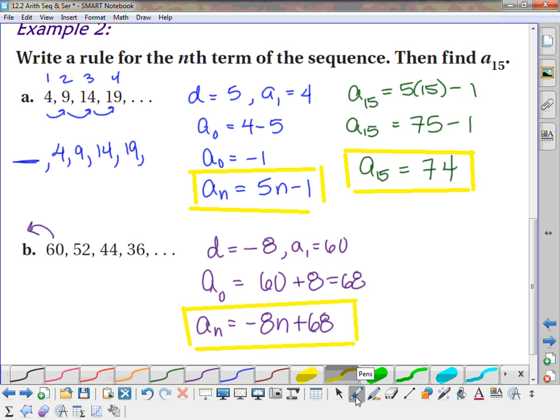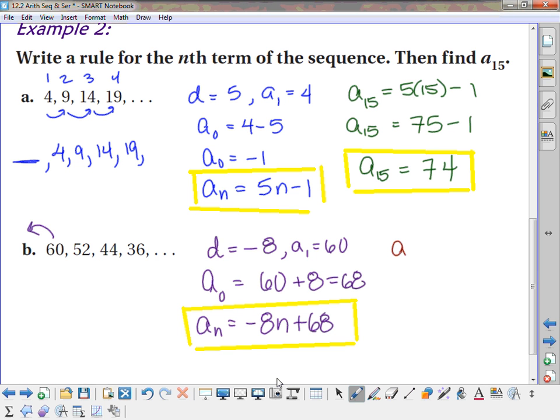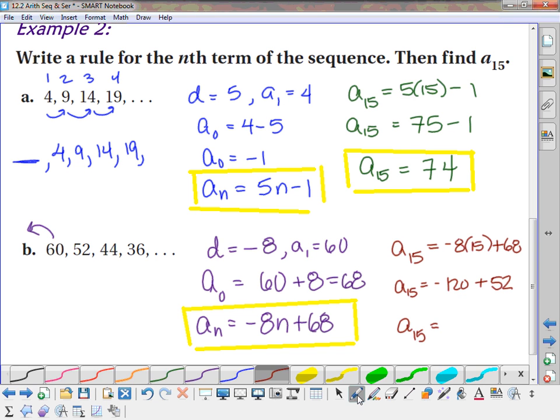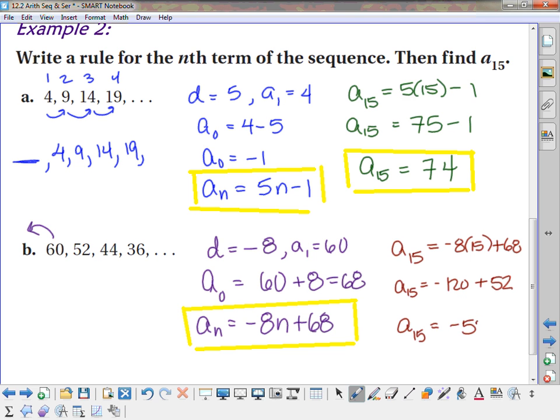All right, then to find a sub 15, we just plug it in. So how about you guys figure out what a sub 15 is now? I'll let you guys figure that out. All right, what did you guys find? Negative 52. Sounds like there's a consensus out there. That's correct.